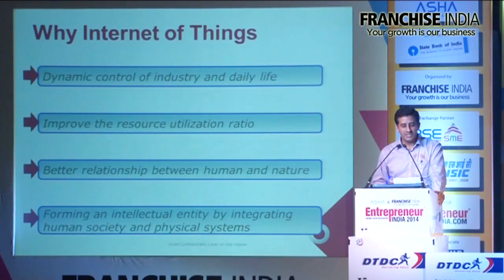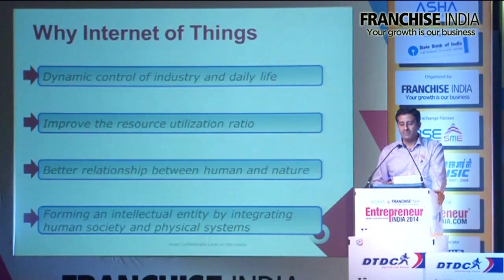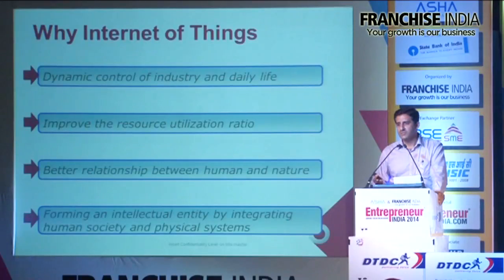Improve resource utilization - an example is power distribution companies, which I'll share in the next slide. Better relationship between human and nature: using sensors to assist environmental protection by monitoring air, water quality, atmospheric and soil conditions, and even monitoring wildlife. In Project Save Tiger, there are tigers which are RFID tagged, and wildlife researchers are trying to understand where their habitats are, understand their behaviors, and track those animals in the forest.